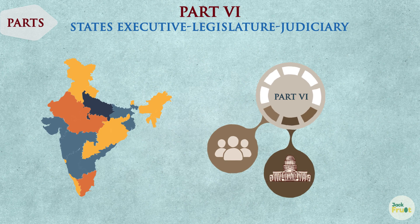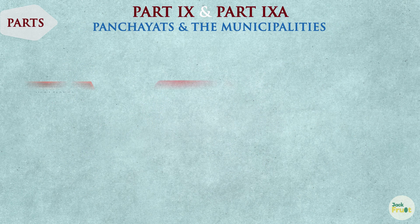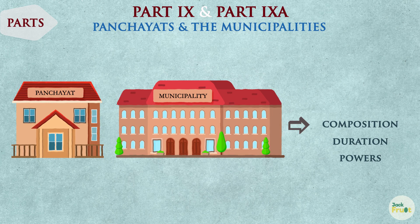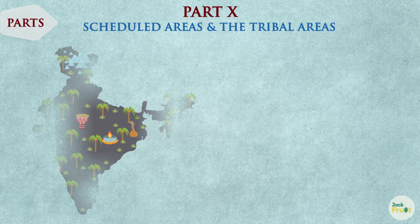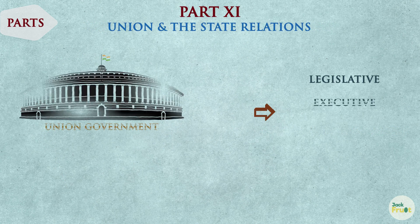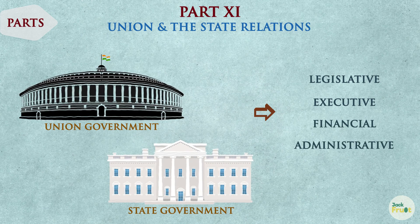In the same way, the state's executive, legislature and judiciary are covered under Part 6 of the Constitution. Part 9 and Part 9A discuss the composition, duration and powers of the panchayats and the municipal bodies respectively. Part 10 of the Constitution talks about administration of scheduled areas and tribal areas. Legislative, executive, financial and administrative relations between the Union and the states are discussed in Part 11 of the Indian Constitution.